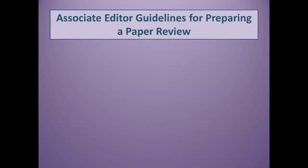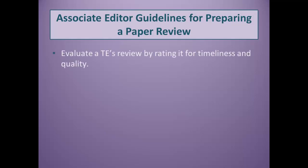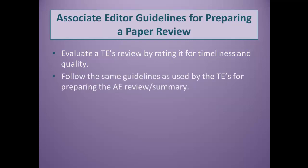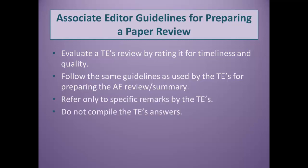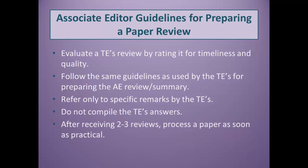Associate editors also have a set of guidelines to follow when processing papers in peer review. If you are an associate editor, you must evaluate each technical editor's review by rating it for timeliness and quality. Follow the same guidelines as those used by technical editors for preparing your associate editor review or summary. Refer only to specific remarks by the technical editors — do not compile their answers. After you've received two to three reviews, process a paper as soon as is practical.